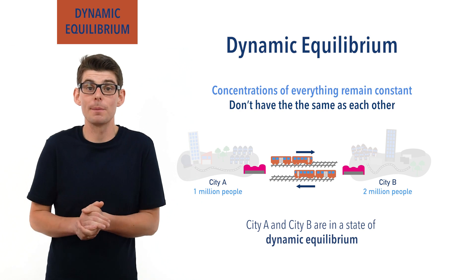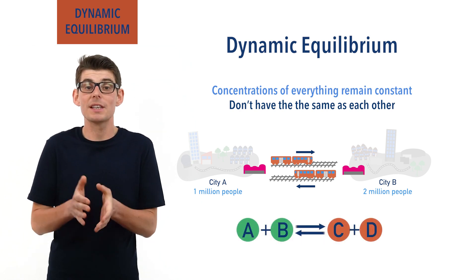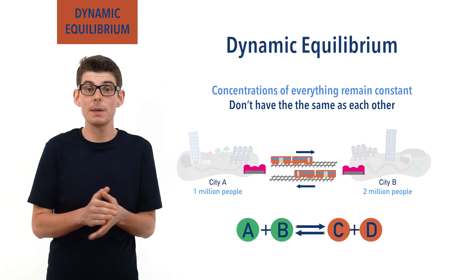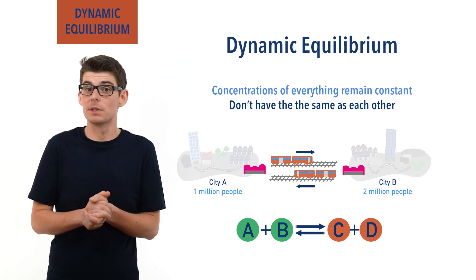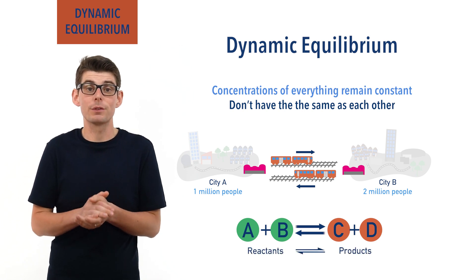It's just like this for a chemical system at equilibrium. Just like the two cities A and B have different numbers of people in, equilibrium systems in chemistry can have reactants and products that also have different concentrations.